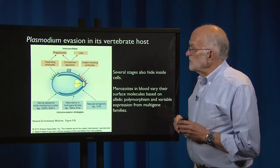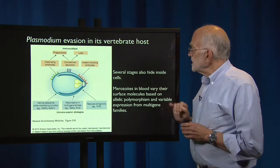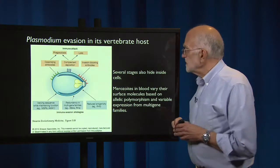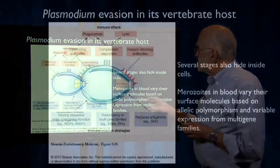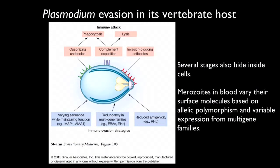Plasmodium has quite an array of methods of evading its vertebrate host. Several stages hide inside cells, particularly inside red blood cells or liver cells. The merozoites that are out in the blood and subject to attack vary their surface molecules based on allelic polymorphisms and variable expression from multi-gene families. They're under attack from opsonizing antibodies, complement deposition, and invasion-blocking antibodies. Their co-evolved response is to vary their sequence while maintaining function, have reduced antigenicity, and have redundancy in multi-gene families, allowing them to generate variable surface molecules.